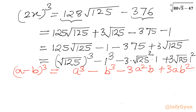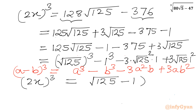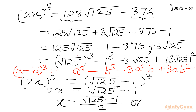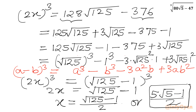So the right-hand side is (√125 − 1)³. Taking cube roots of both sides, 2x = √125 − 1. Dividing by 2 gives our answer: x = (√125 − 1)/2 = (5√5 − 1)/2. This was our method number 1.